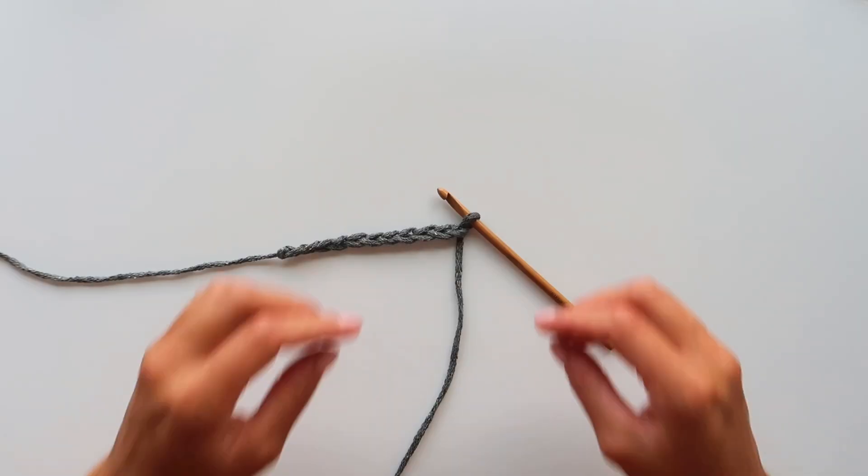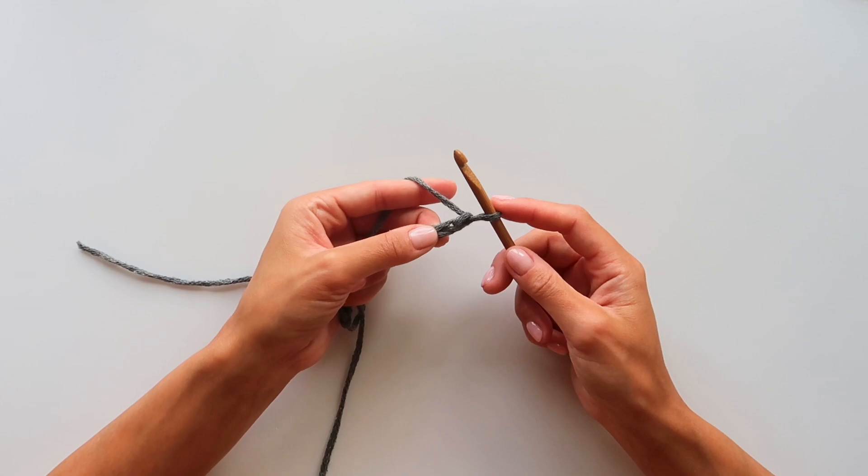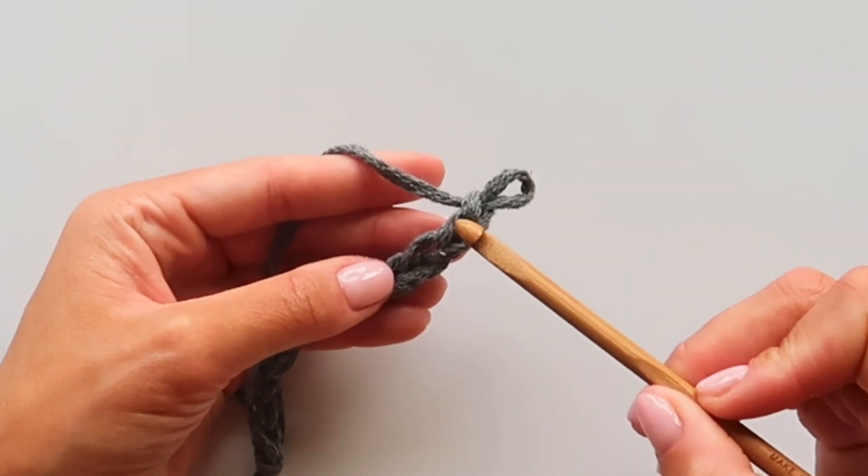This is how you make the single crochet. As you can see here, I've just started with the foundation chain already. And to clarify, I will show you the loops in the chain we were going to work with.